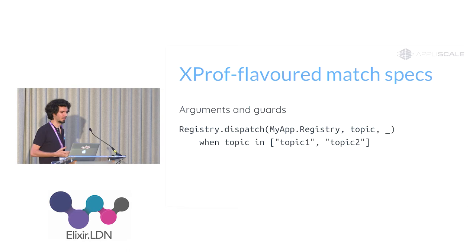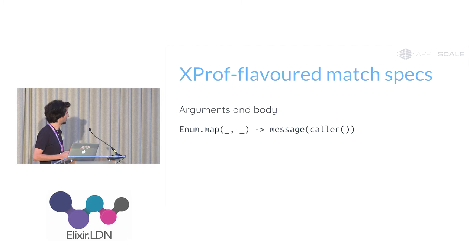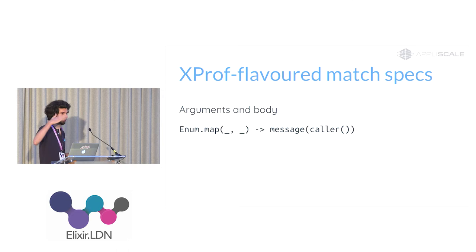You can also add guards — for example, only measure Registry.dispatch calls when it's called on topic 1 or topic 2. Guards allow you to match on multiple values as well. Here is the body part. The most important action function is 'message', which modifies the actual trace message sent at the low level. On the X-Prof level, it has no effect when just looking at the graph — it only has an effect when you actually capture the arguments, showing what you put in the message instead.